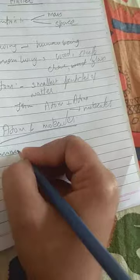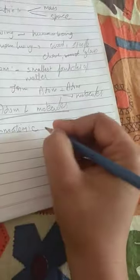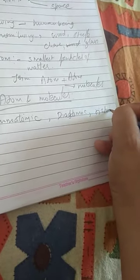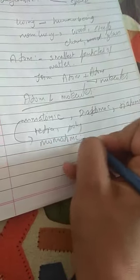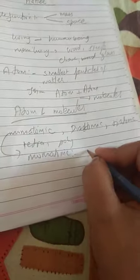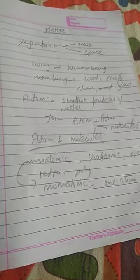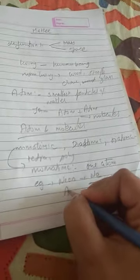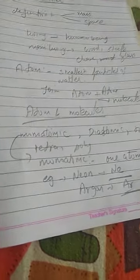Depending upon the number of atoms, we have the categories: monoatomic, diatomic, triatomic, tetraatomic, and polyatomic. Monoatomic molecules are molecules that have only one atom. Examples include neon (Ne) and argon (Ar) — these are monoatomic molecules.